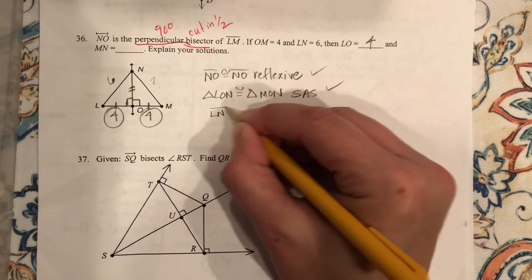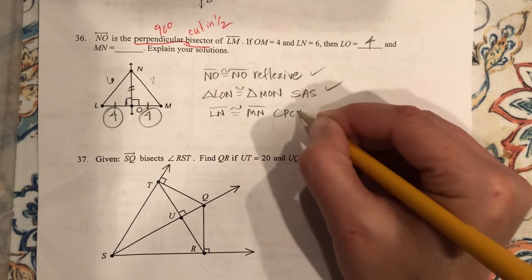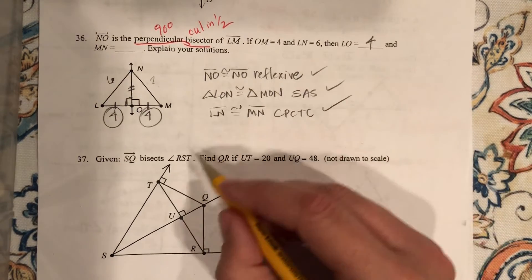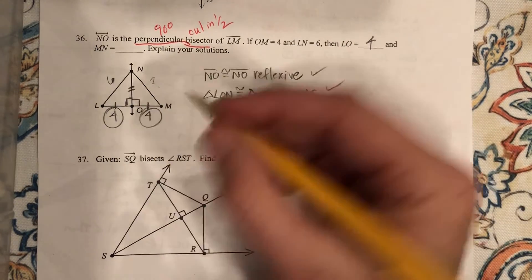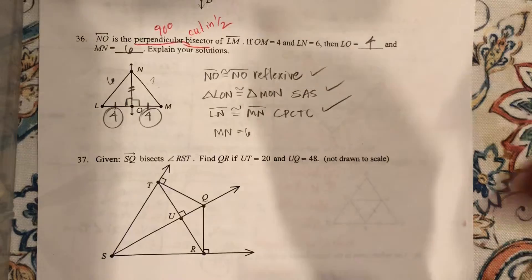So now I can say LN is congruent to MN by CPCTC, which means that if LN is 6, MN equals 6 also.